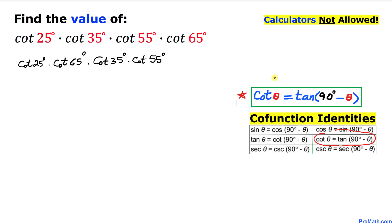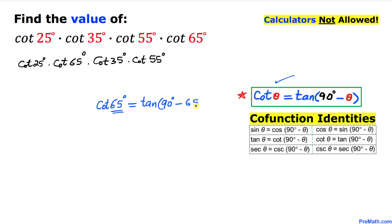Now let's focus on the identity for cotangent of 65 degrees. Applying the co-function identity formula, cotangent can be written as tangent of 90 degrees minus that angle. So cotangent of 65 degrees equals tangent of 90 degrees minus 65 degrees, which is tangent of 25 degrees.